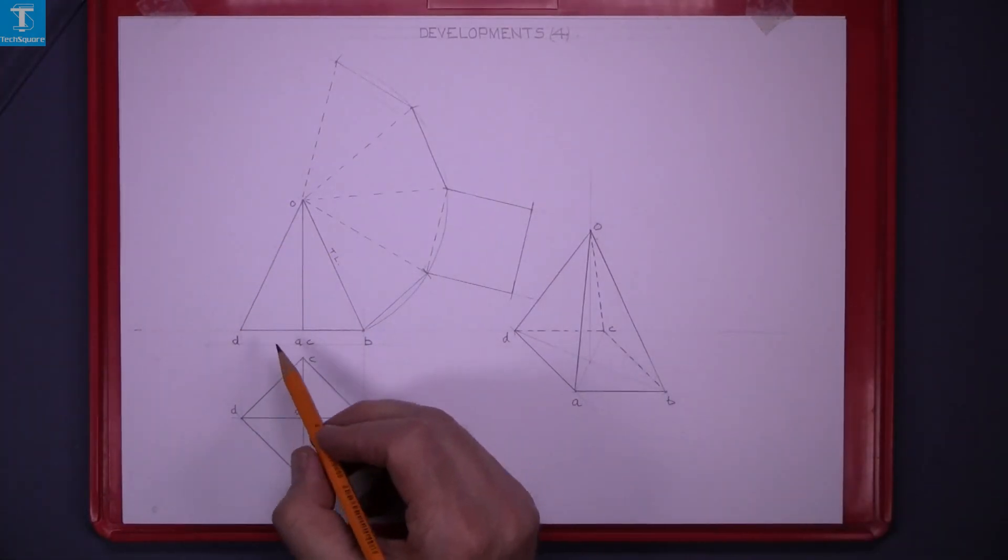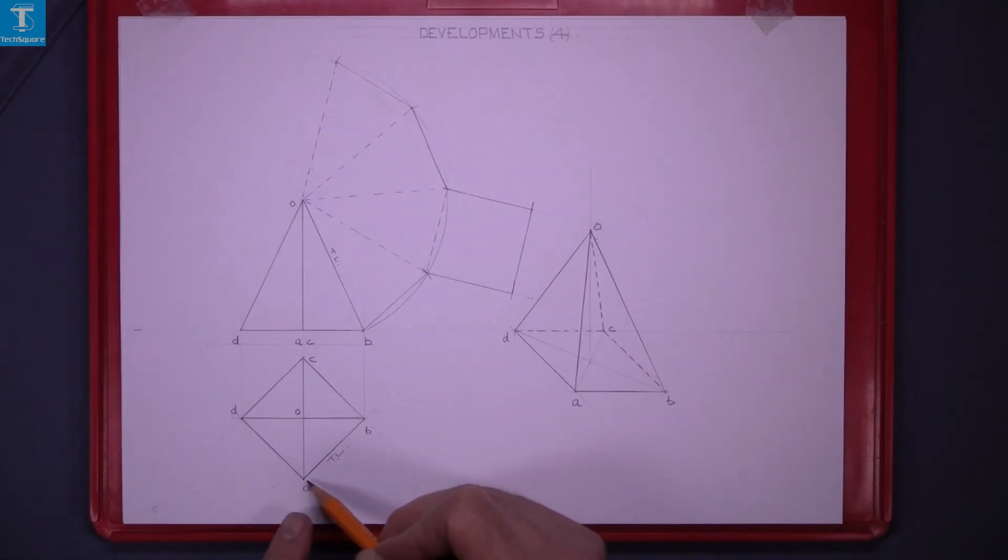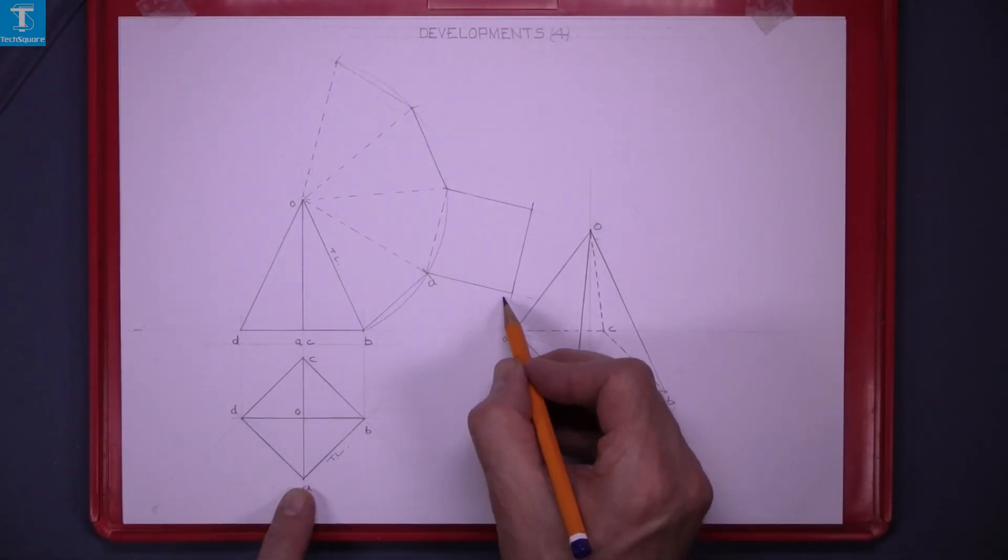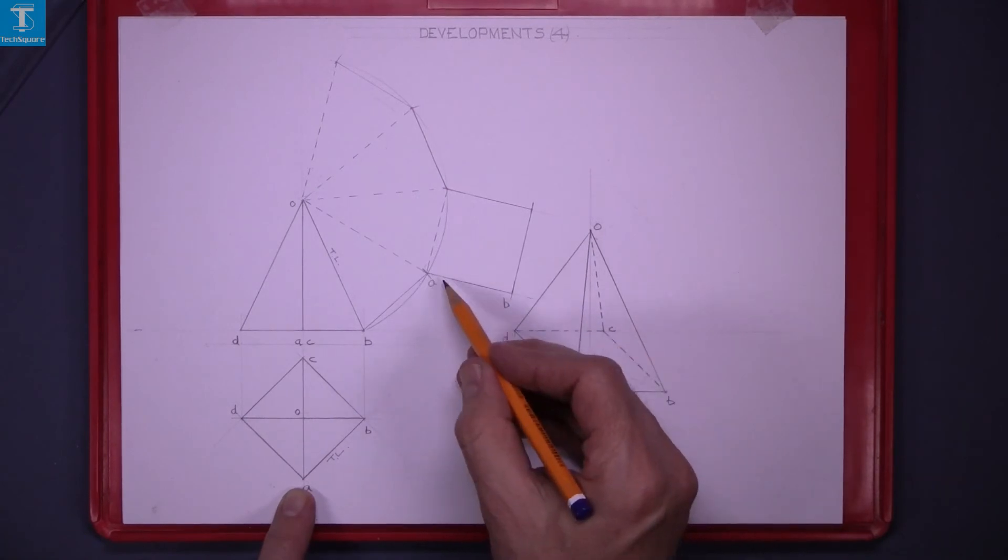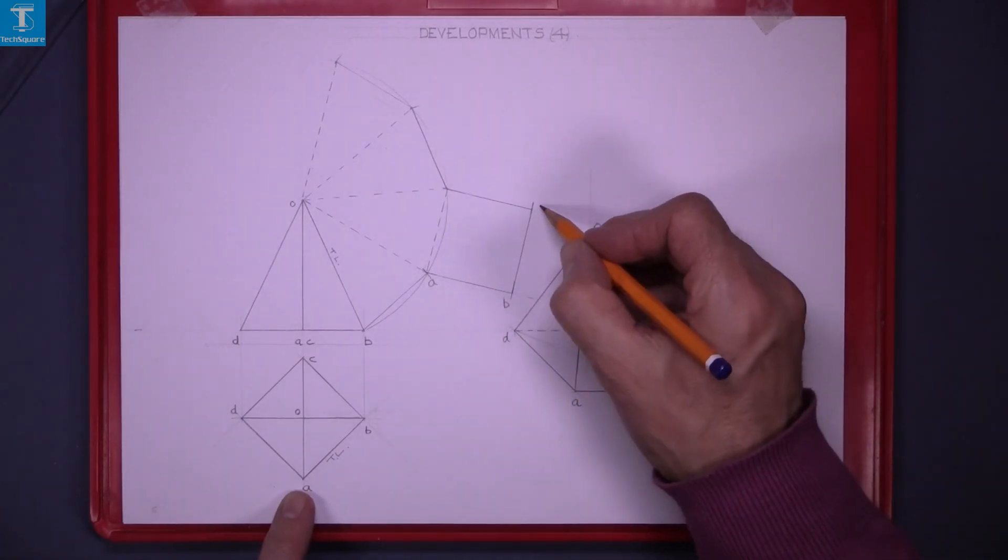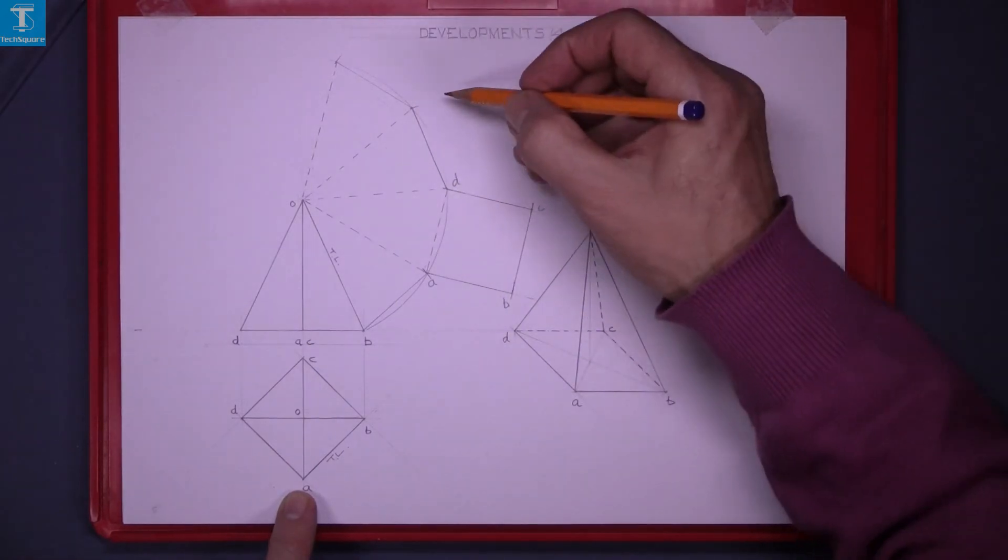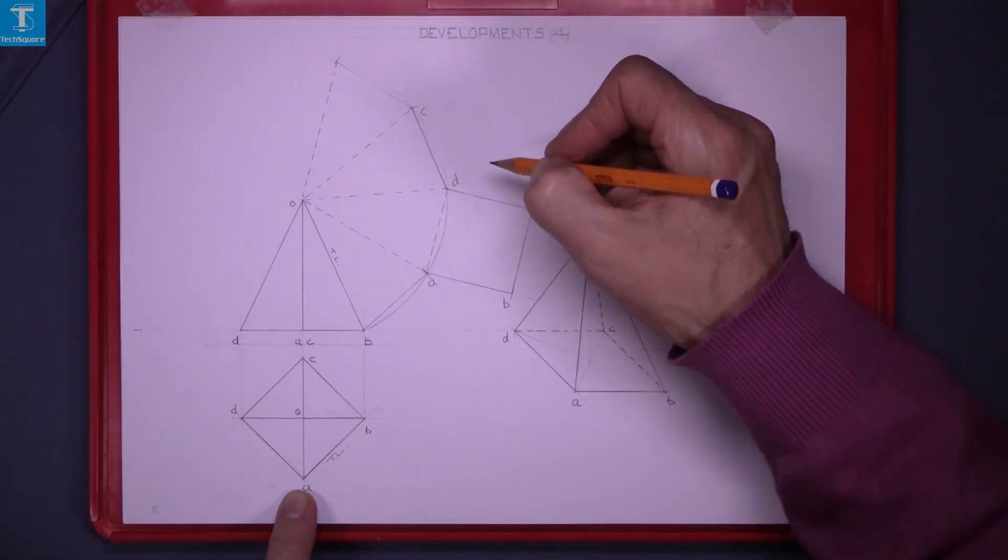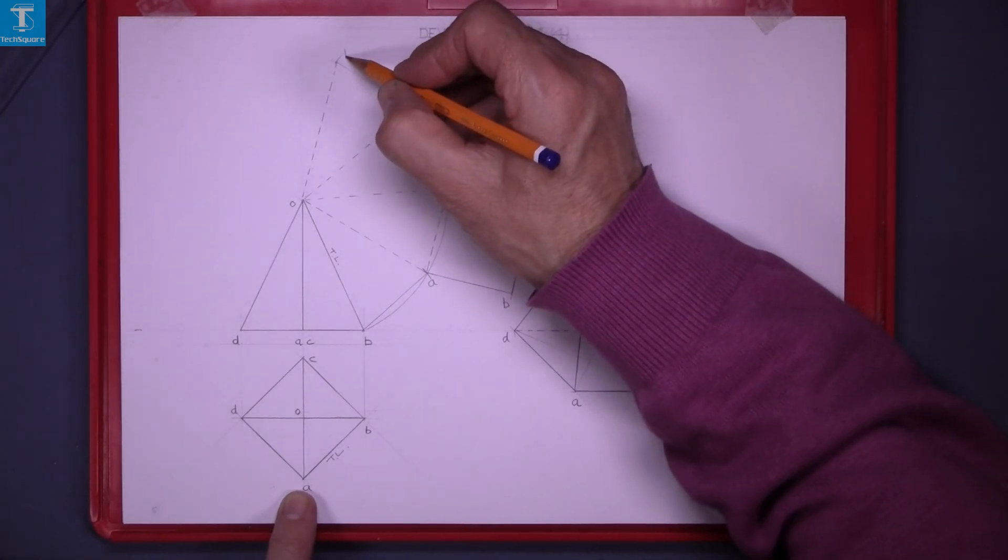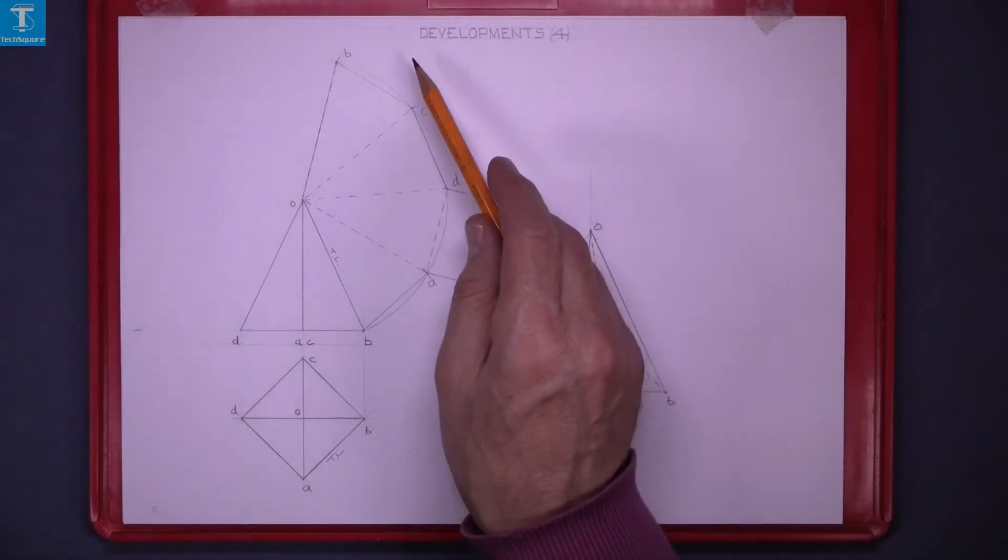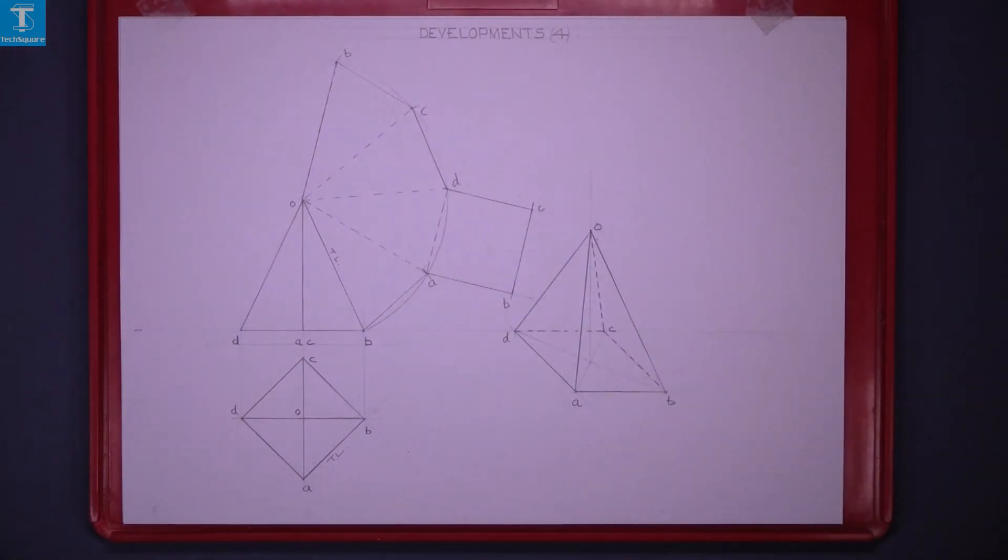And now to index it. This is B so next one is A. This one here will be B. This one here is C. D. This one here will be C again. And this back to B. And that's the development complete.